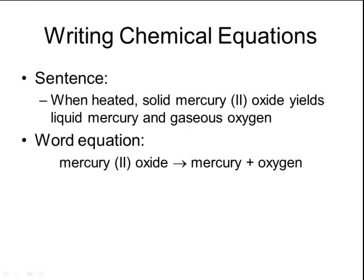In a word equation, in place of the word 'yields' we can substitute an arrow, and in place of the word 'and' we can substitute a plus sign. So now it reads: mercury oxide → mercury + oxygen.